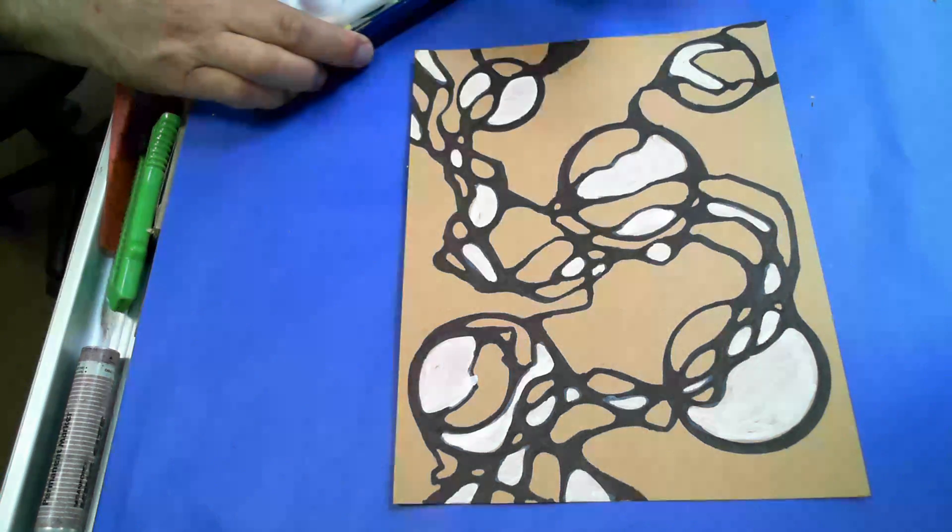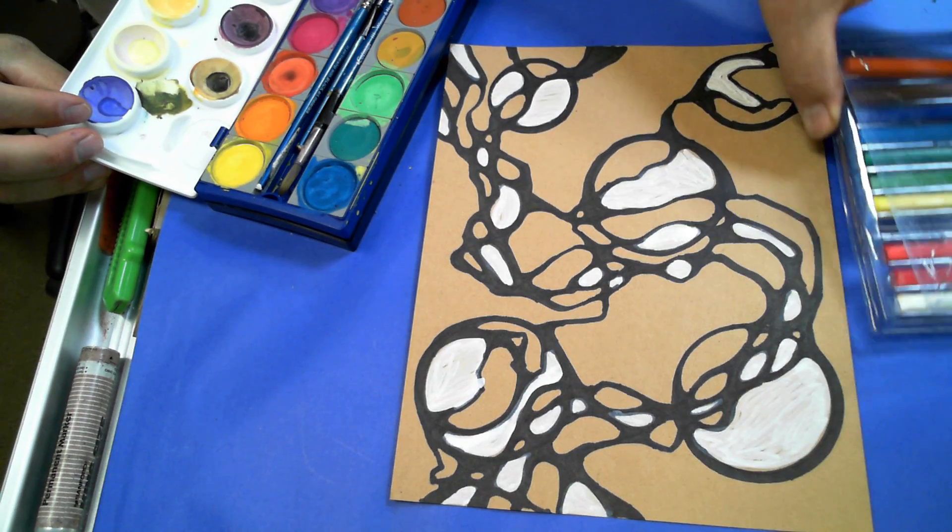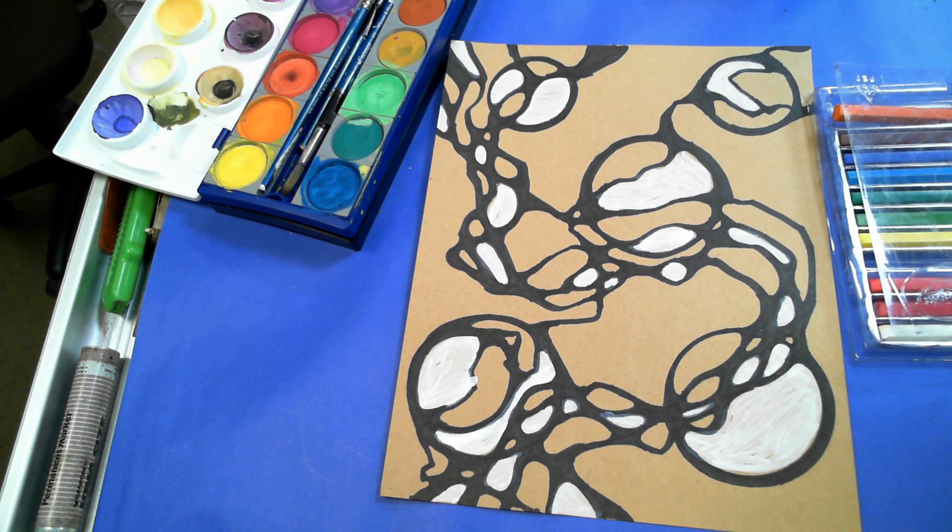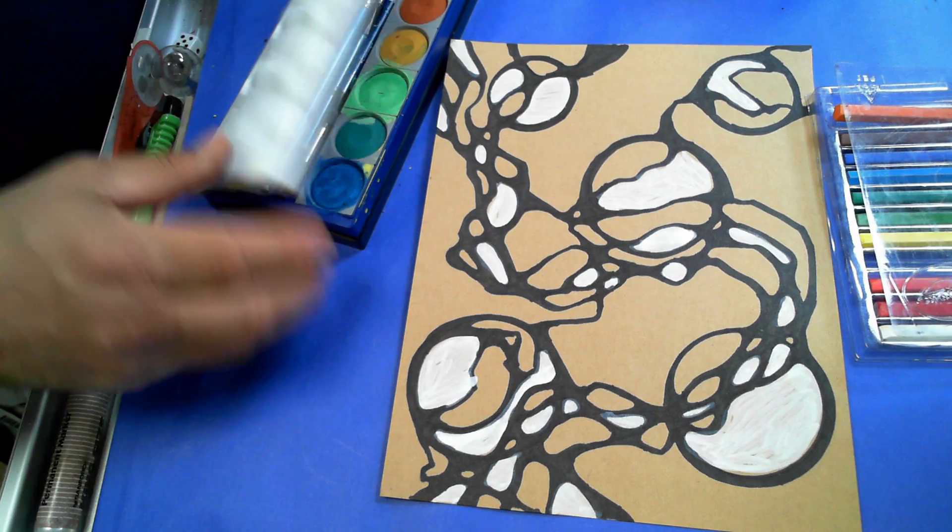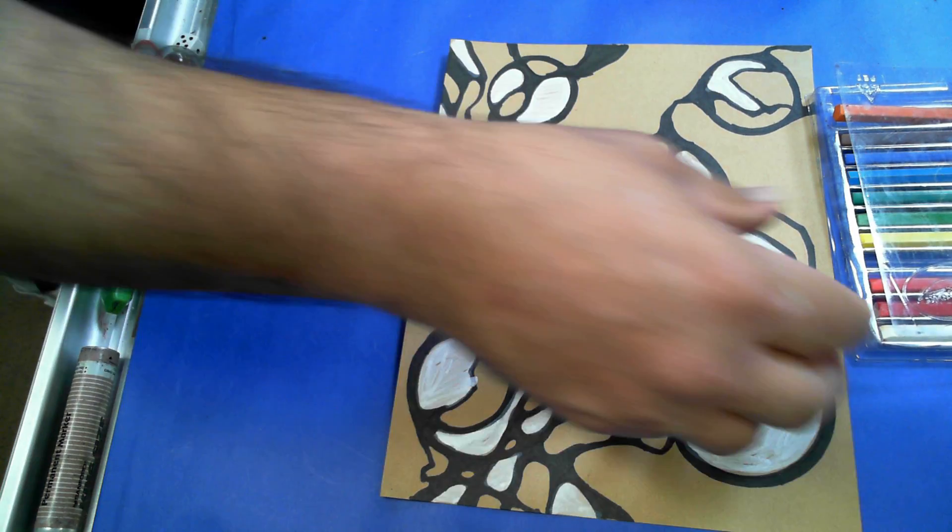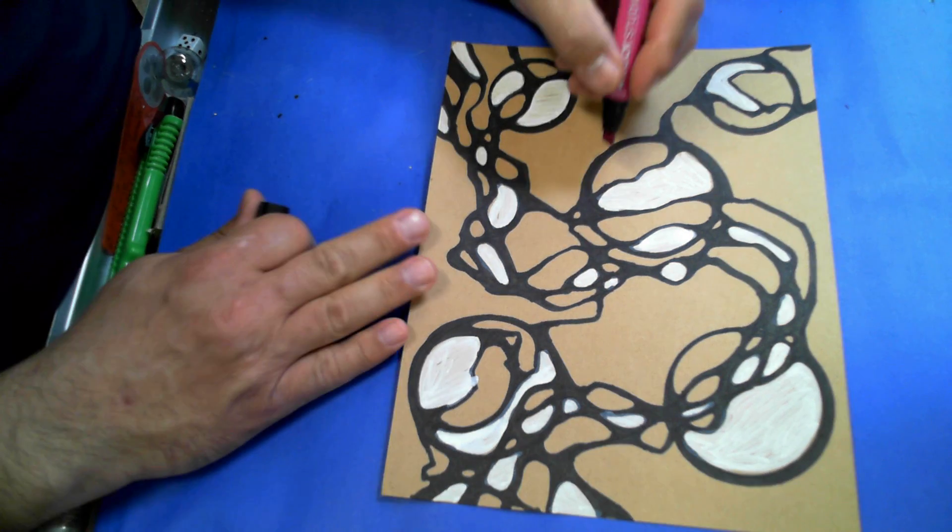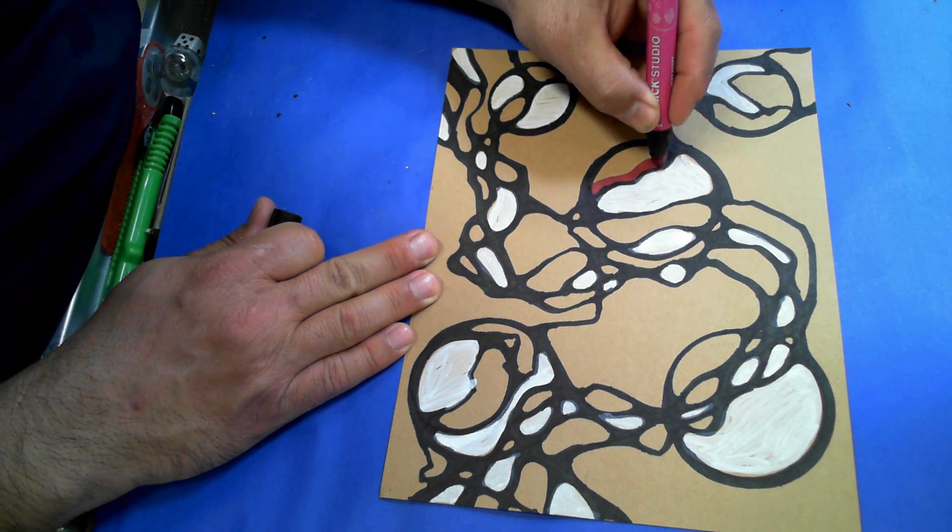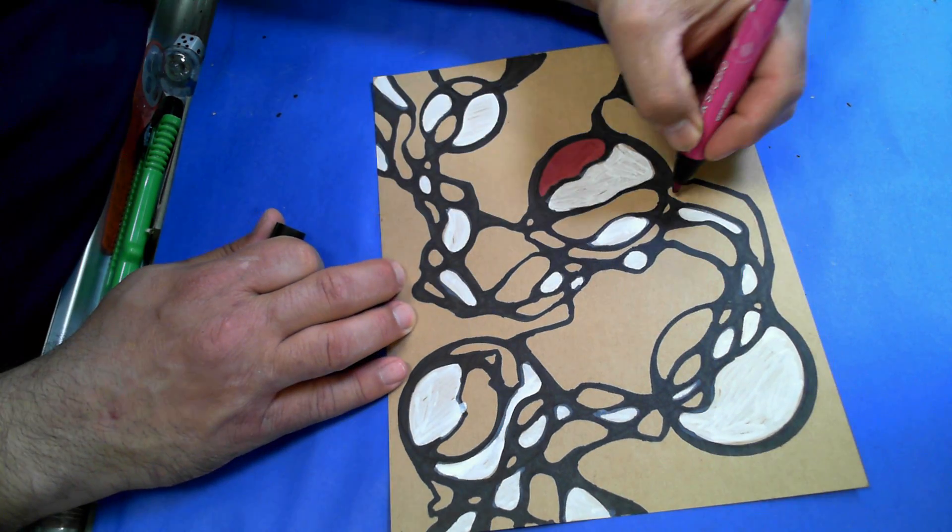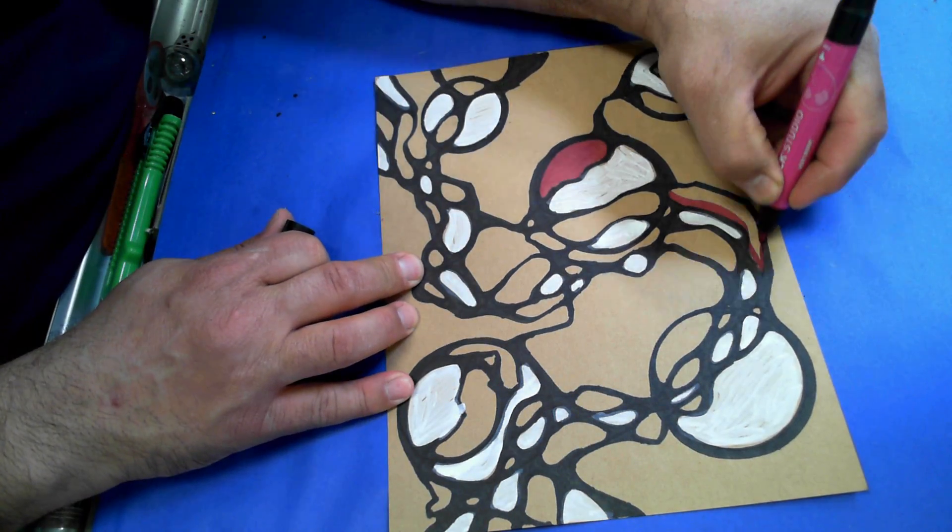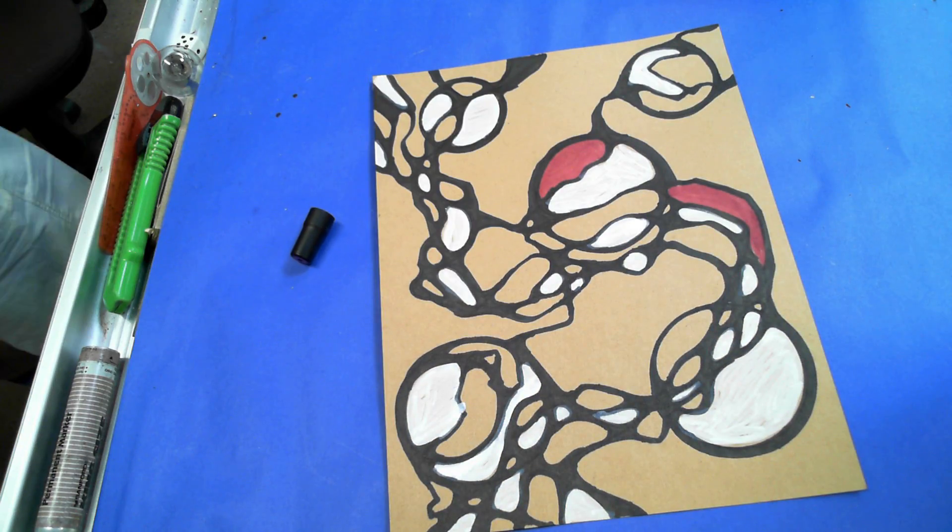I could choose to use crayons. I've got crayons here. Or I could use markers. And for right now, I'm just going to go the simple route. I'm going to use markers, and I'm just going to start adding some color. So I'm going to add color in spots. And I might add more. And I will just continue to add and bring in more color.